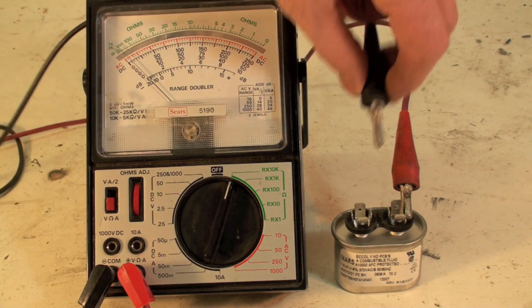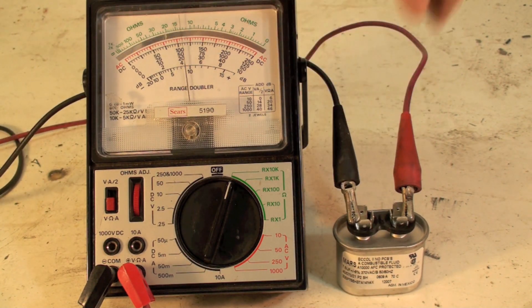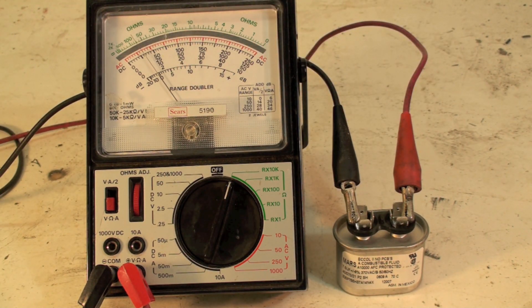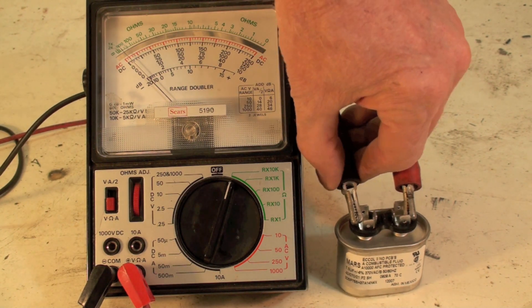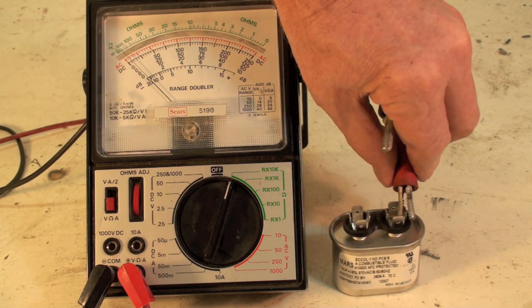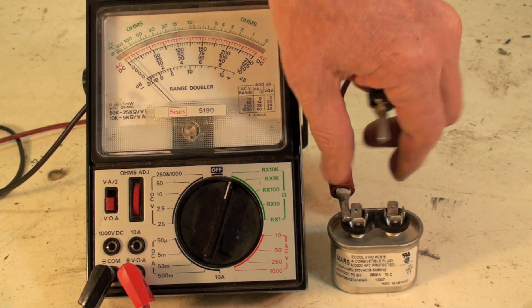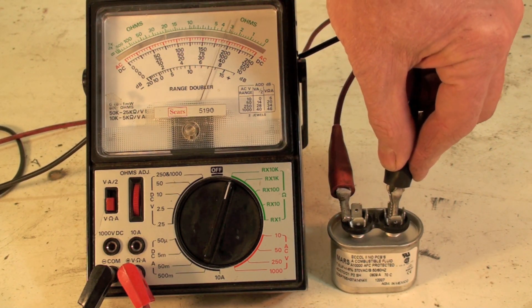Okay, what we're going to do, I'm in R times 10K and hook this up. Now you can see it goes over towards zero and then back again - that's telling me the cap's good. If you want to double-check it, you have to reverse the terminals and it does it again.